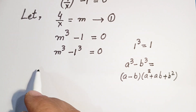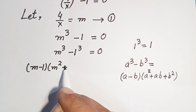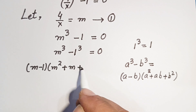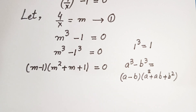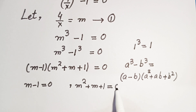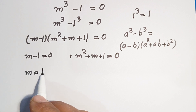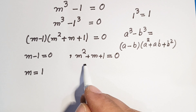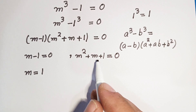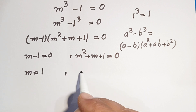Applying this formula, we get m minus 1 times m squared plus m times 1 plus 1 squared equals 0, which gives m minus 1 times m squared plus m plus 1 equals 0. So we have two possible cases: m minus 1 equals 0, or m squared plus m plus 1 equals 0. In the first case, m equals 1.